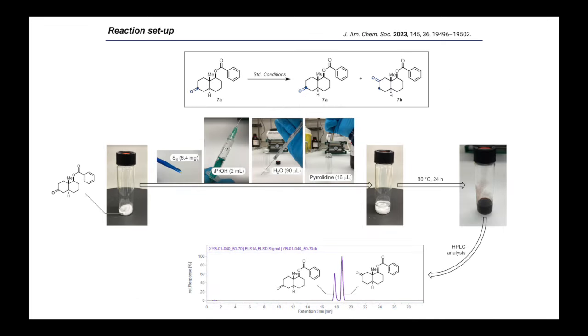To illustrate the practical aspect of our method, I am showing a typical reaction setup on a Wieland-Miescher ketone derivative depicted in the scheme on a scale of 1 mmol. A 20 mL vial is equipped with a magnetic stir bar and charged with the starting material. Then, 6.4 mg of sulfur is added, followed by 2 mL of isopropanol. Then, 90 microliters of water is added using a Hamilton syringe, followed by 16 microliters of pyrrolidine. The vial is then stirred and heated at 80 degrees over 24 hours.